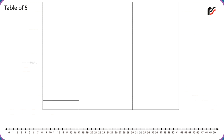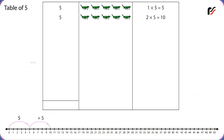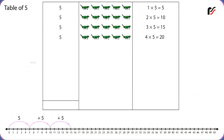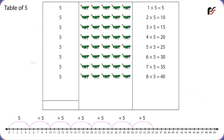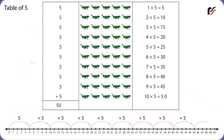Table of 5. 1 x 5 is equal to 5. 2 x 5 is equal to 10. 3 x 5 is equal to 15. 4 x 5 is equal to 20. 5 x 5 is equal to 25. 6 x 5 is equal to 30. 7 x 5 is equal to 35. 8 x 5 is equal to 40. 9 x 5 is equal to 45. 10 x 5 is equal to 50.